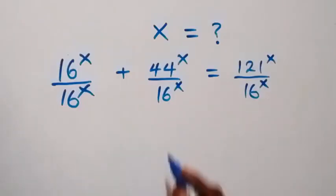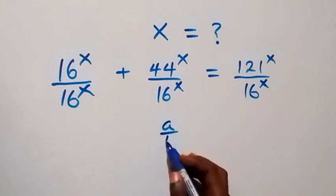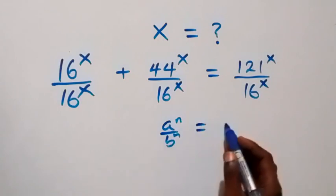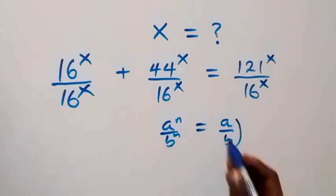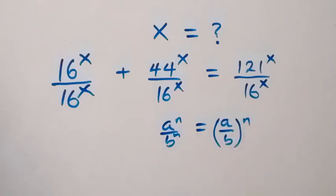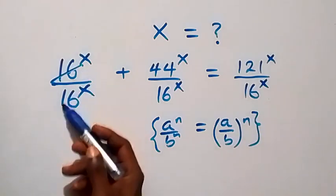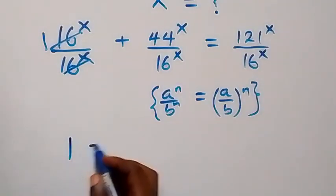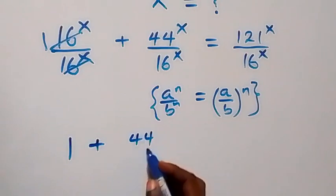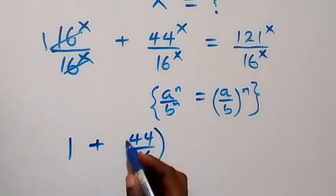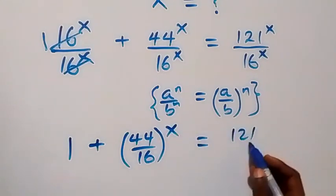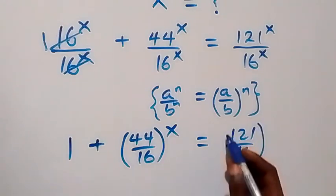From what we have here, when we have a over b raised to power x, this is the same thing as a over b all raised to power x. Applying this here, we cancel out and are left with 1. So here we have 1 plus 44 over 16 all raised to power x, now equals 121 over 16 all raised to power x.